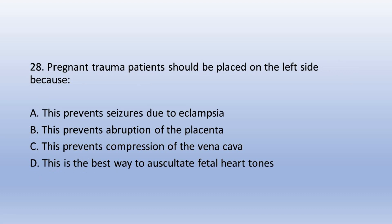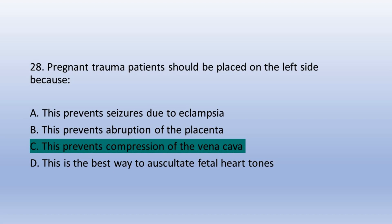Question 28. Pregnant trauma patients should be placed on the left side because: A. This prevents seizures due to eclampsia, B. This prevents abruption of the placenta, C. This prevents compression of the vena cava, D. This is the best way to auscultate fetal heart tones. The answer is C. This prevents compression of the vena cava.